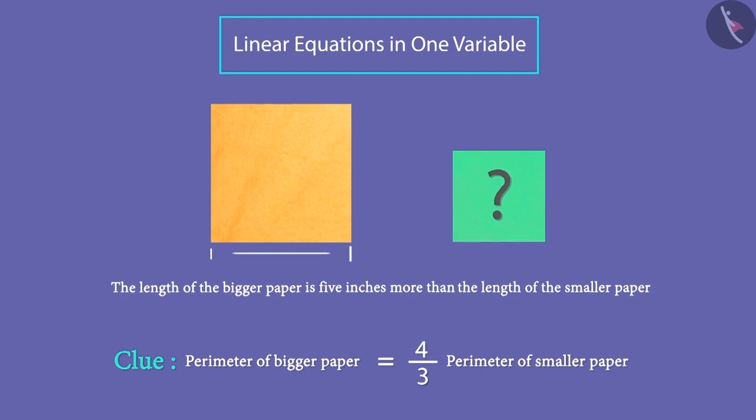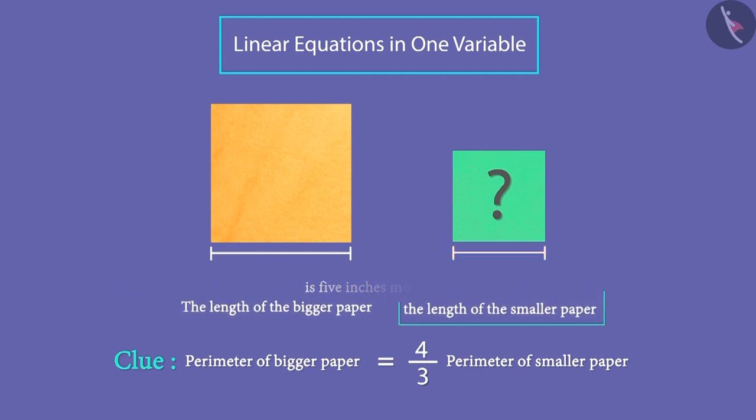We have been told that the length of the bigger paper is 5 inches more than that of the smaller paper. So, if we use L as the variable of length of smaller paper, then the length of bigger paper will be equal to L plus 5.